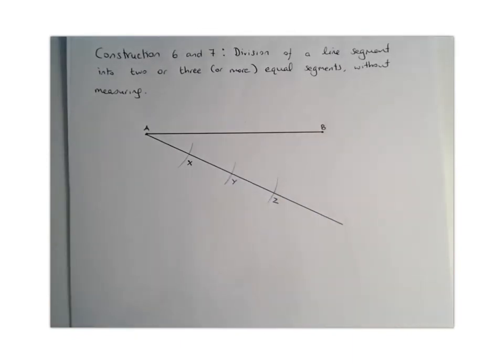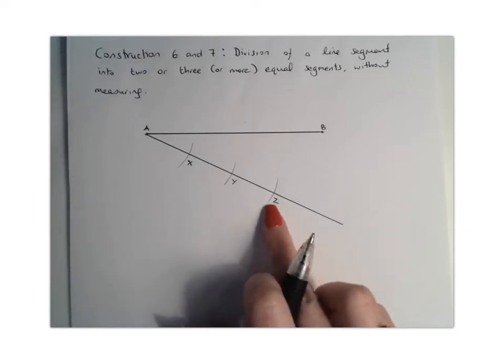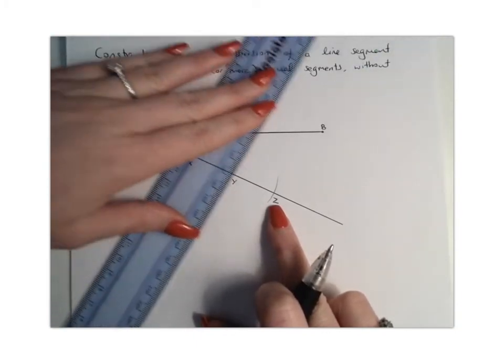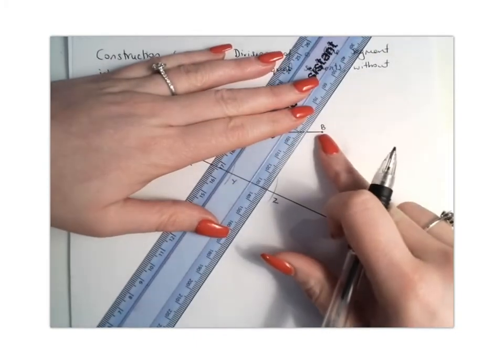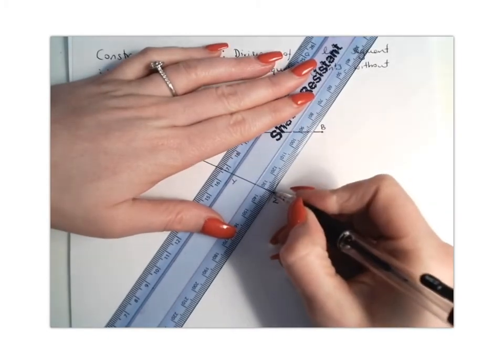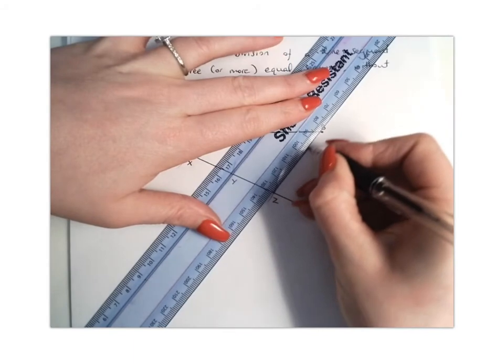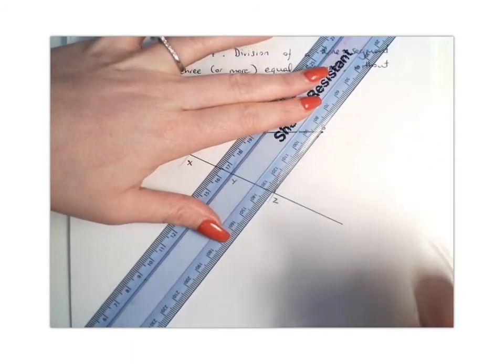Right, so what we do is we have to go to the last arc that we drew. So that's very important. So the last one that I drew was obviously Z. And what we're going to do is you're going to join Z with the end point of your line segment. So we're going to join this up. So we're going to have Z here and B here. And that's our first point.